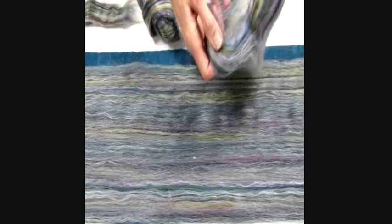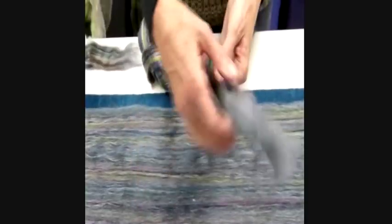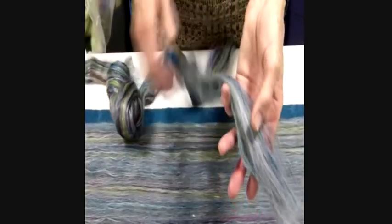Take the roving and you'll see how thick it is. And we're going to split this in half lengthwise. This gives us a more manageable piece of fiber to work with.